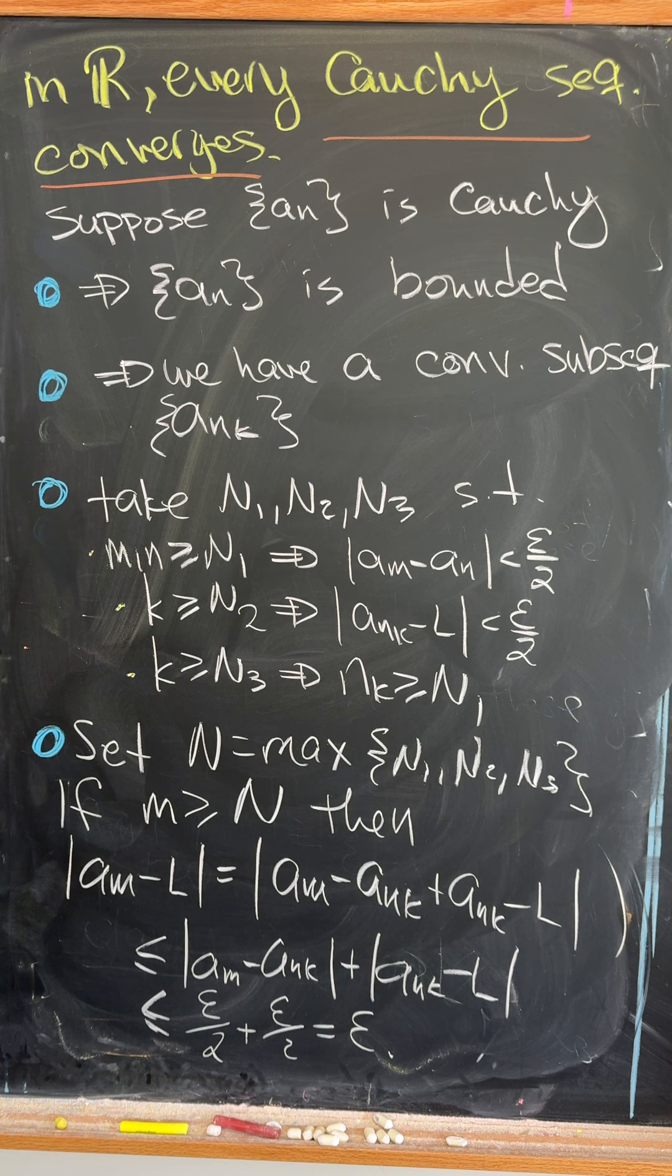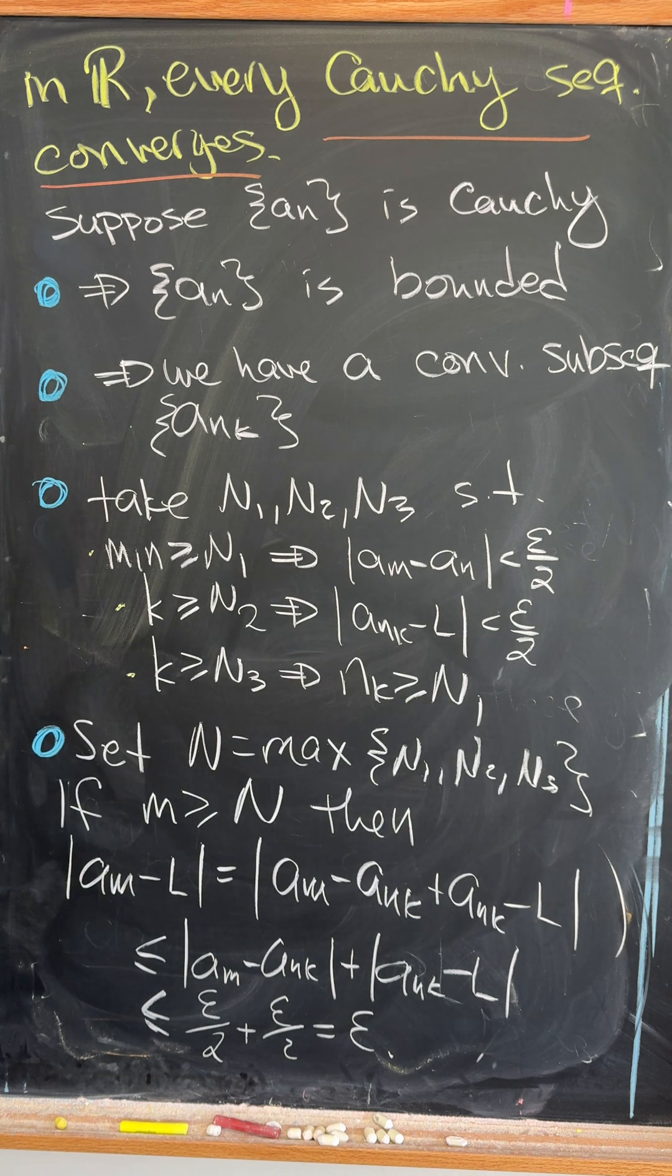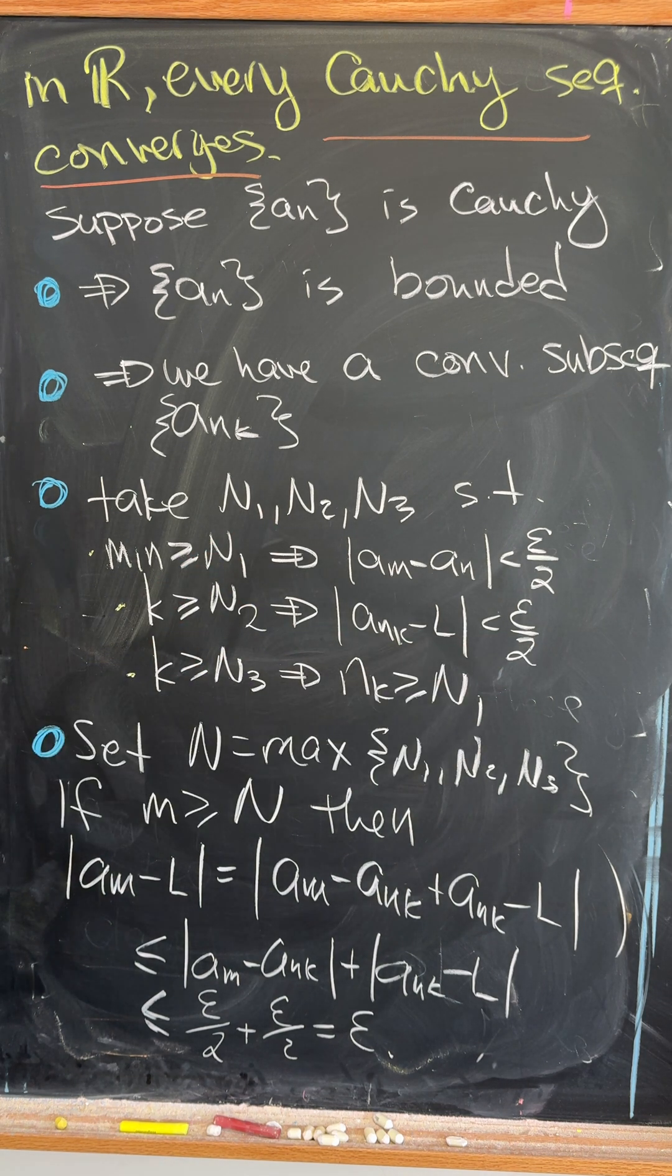Now we're going to take three natural numbers, N1, N2, and N3. The N1 is going to correspond to the Cauchy condition. The N2 is going to correspond to the convergent subsequence condition.